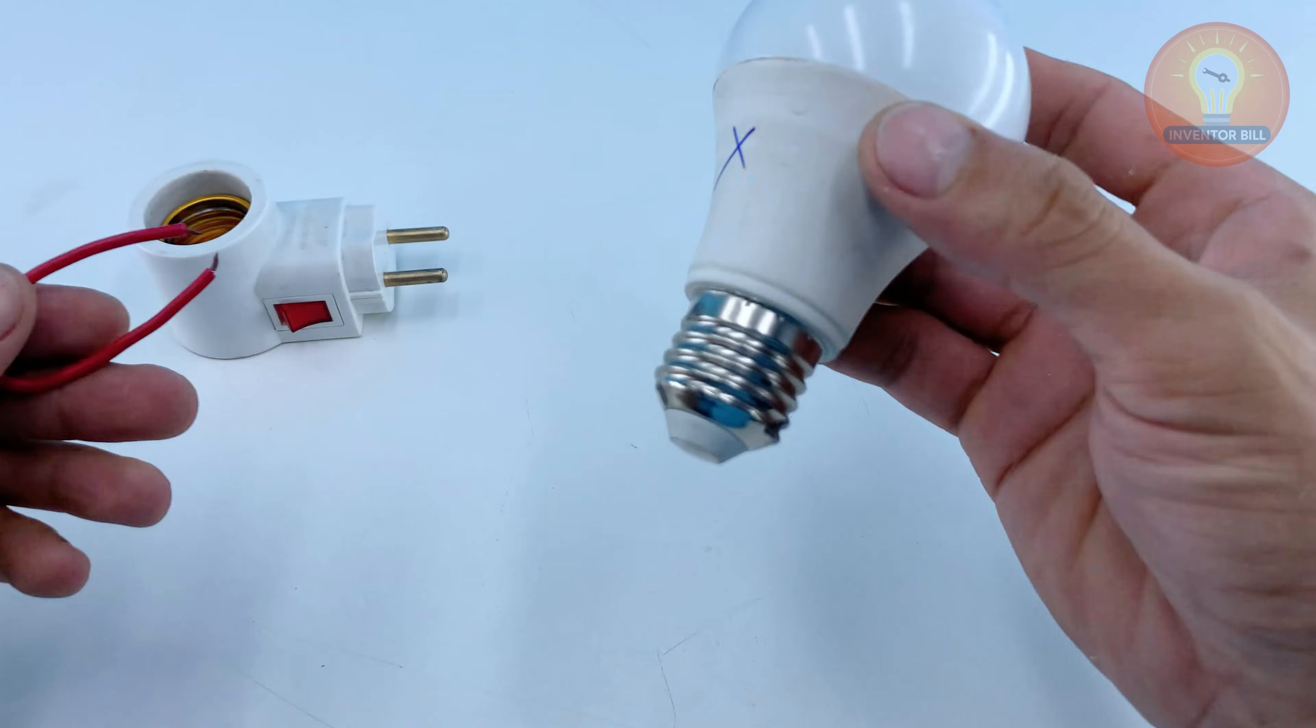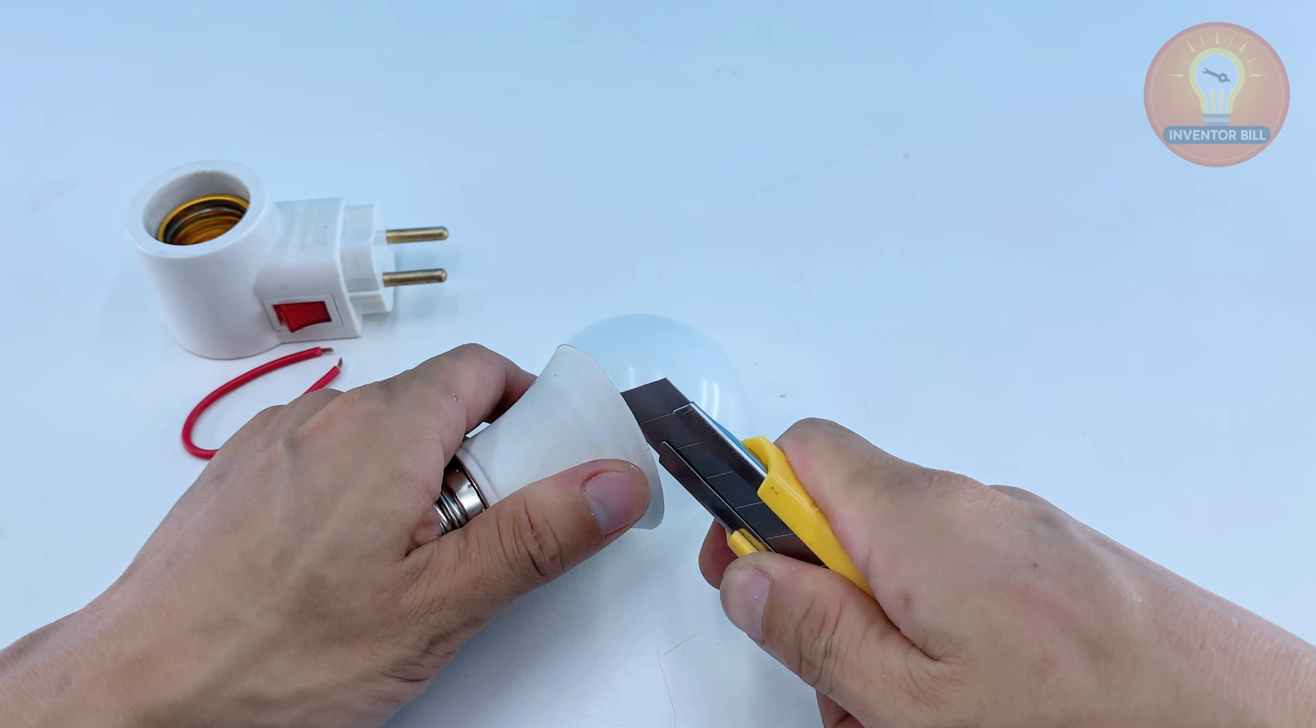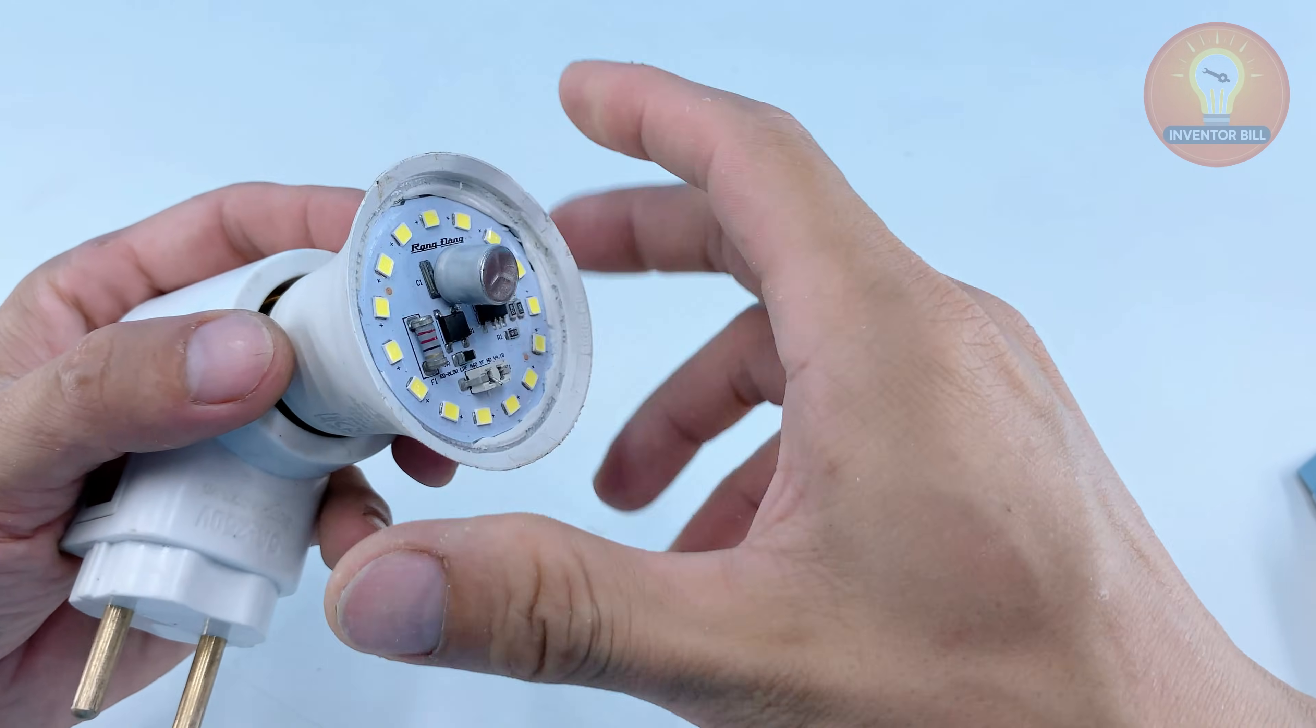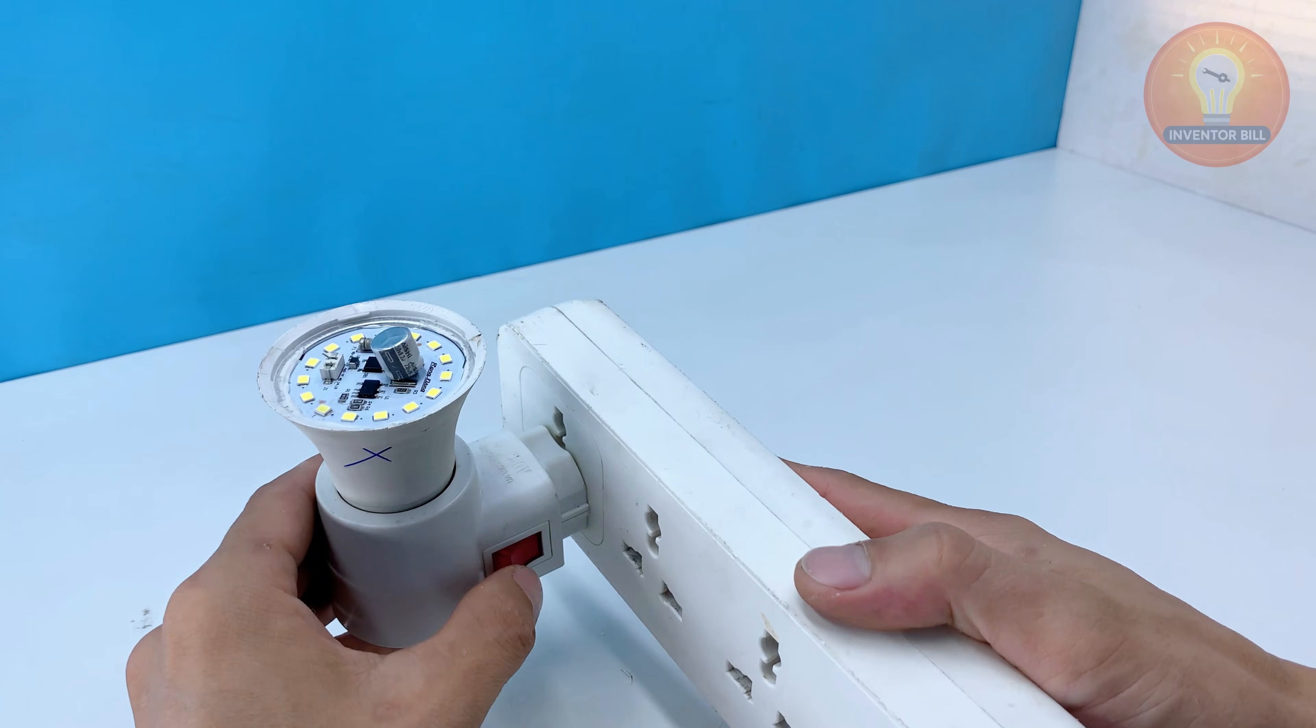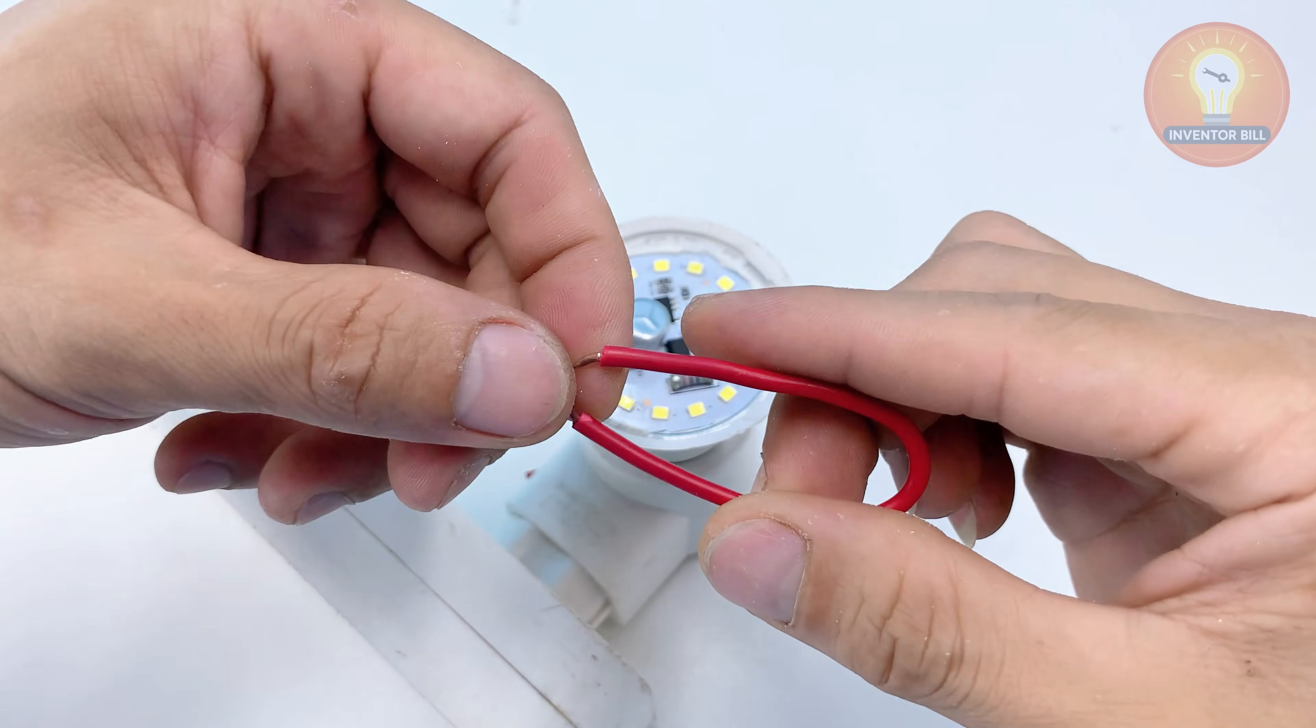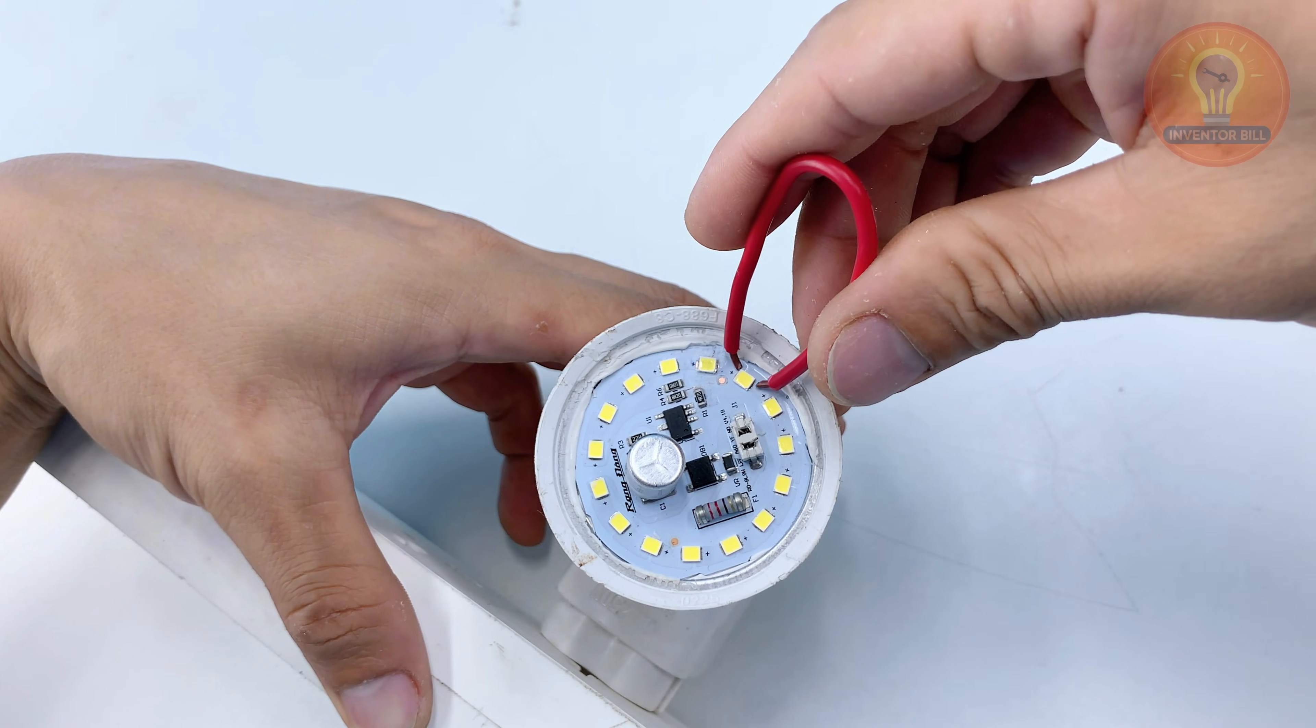Now you take the second broken bulb and repeat the same careful steps. You open the plastic cover with your utility knife and pull the round LED board out so you can test it. Hook it up to your power source and use your homemade copper tip tweezers to touch each LED one by one.